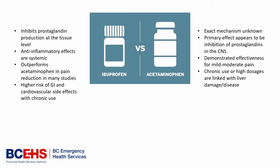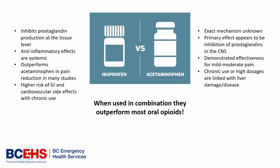Acetaminophen, on the other hand, though it's been around for many years and has been demonstrated safe in most cases, we still don't know exactly how it works. It seems to be some degree of inhibition of prostaglandin directly within the CNS at the hypothalamus level for fever, and there could be some degree of anti-inflammatory property that isn't well understood, but for now it's really just classified as an analgesic — and it's a very effective analgesic for mild to moderate pain. We do have to watch that chronic high doses are linked to liver damage, as it's metabolized in the liver and produces toxic byproducts. The interesting thing, though, is when we combine these two together the synergistic effects are pretty amazing — you get the anti-inflammatory properties of ibuprofen and the central CNS analgesic properties of acetaminophen, and together they actually outperform most oral opioids.